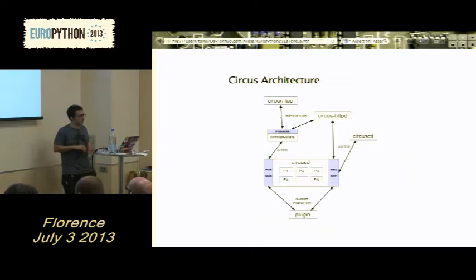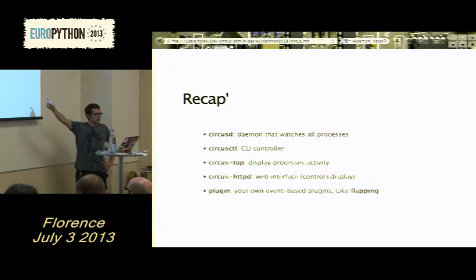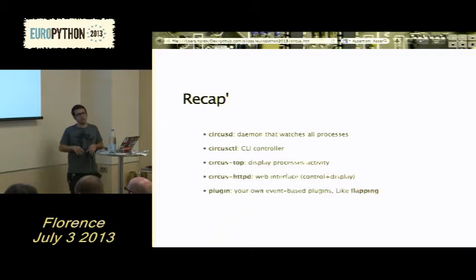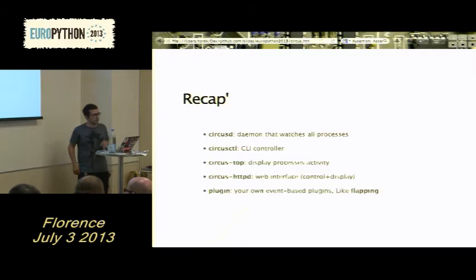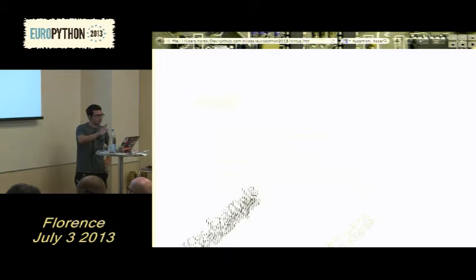We also have a CircusCTL command-line tool to send commands to Circus. To recap the components: CircusD is the daemon that watches all processes; CircusCTL is the command-line tool you can run from another box by specifying which CircusD to talk to; CircusTop is the top-like command displaying what's going on; CircusHTTPD is the web interface; and you can write any plugin you want using our plugin system.